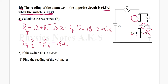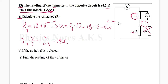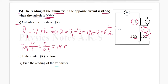So R equals 6 ohm. Now in part B, when switch K is closed, these two resistors — the 12 and 12 ohm — are connected in parallel. I can find their combined resistance: (1/12 + 1/12)⁻¹ equals 6 ohms.